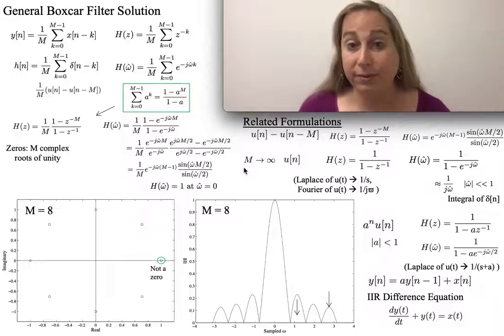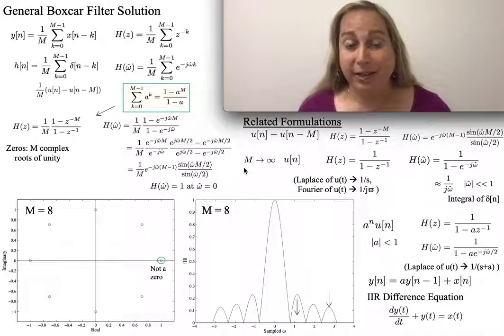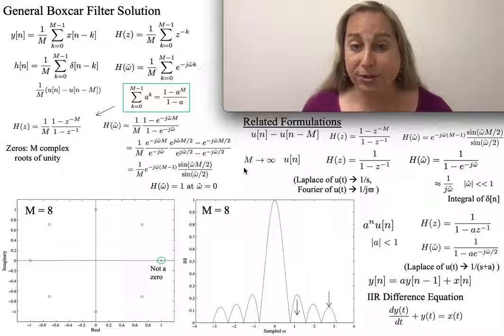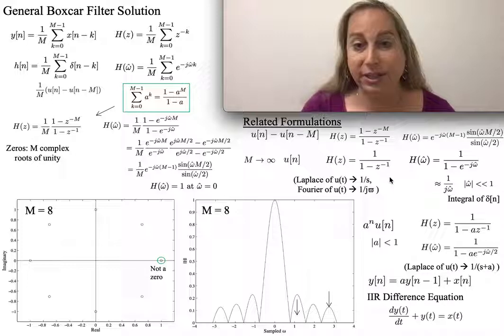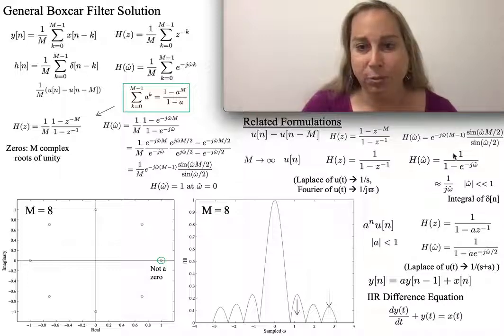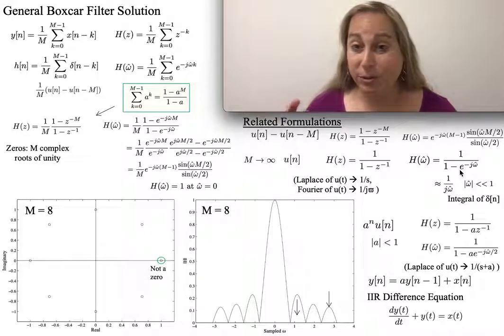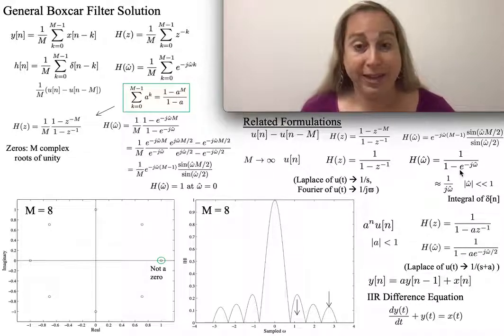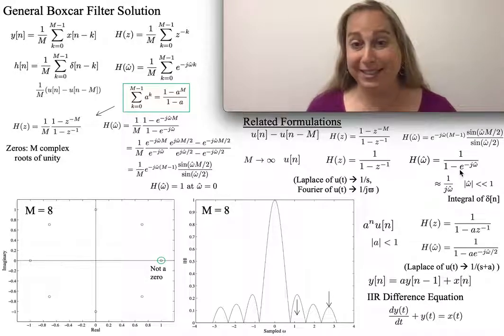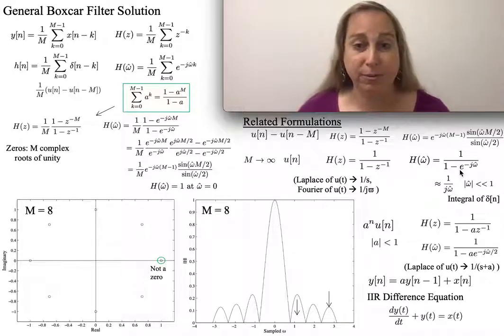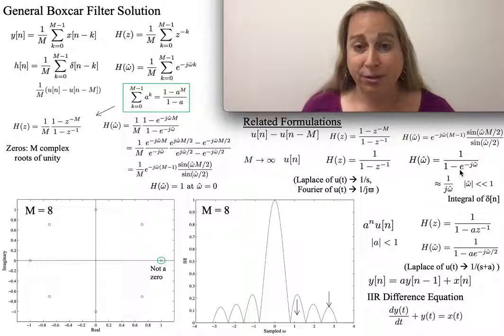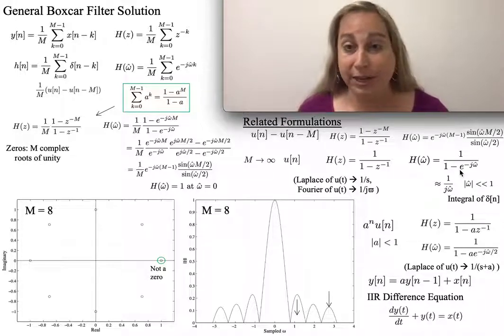Here's an interesting thought: what if M goes to infinity? Well, now that's just the response for u[n], which is a nice way to get this. What you find is for H(z) is 1 over 1 minus z^(-1), the frequency response is 1 over 1 minus e^(j omega hat), which for small omega is really 1 over j omega hat, which is interesting because it's something related to an integral. For those familiar with Laplace transforms or Fourier transforms, you realize there I get a 1 over s or 1 over j omega. So I'm getting exactly the same behavior in terms of an integral.